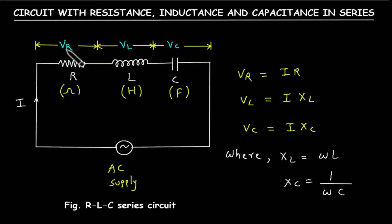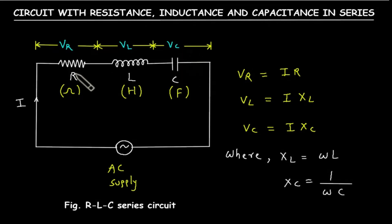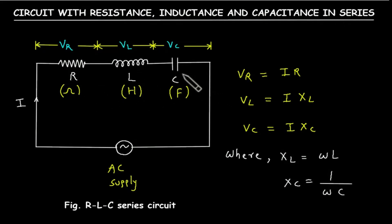Vr is the voltage drop across this resistor, Vl is the voltage drop across this inductor, and Vc is the voltage drop across this capacitor. The unit of resistance is Ohm, the unit of inductance is Henry, and the unit of capacitance is Farad. The current flowing through this circuit is I.